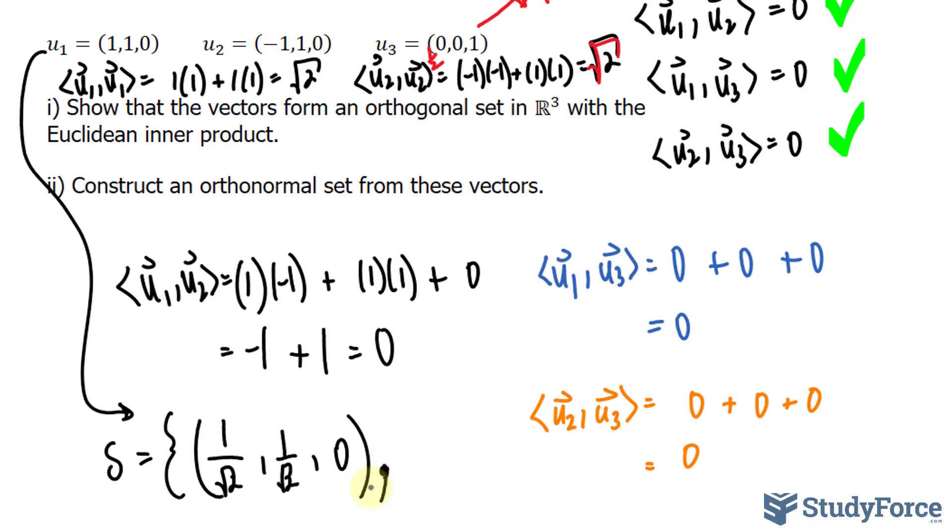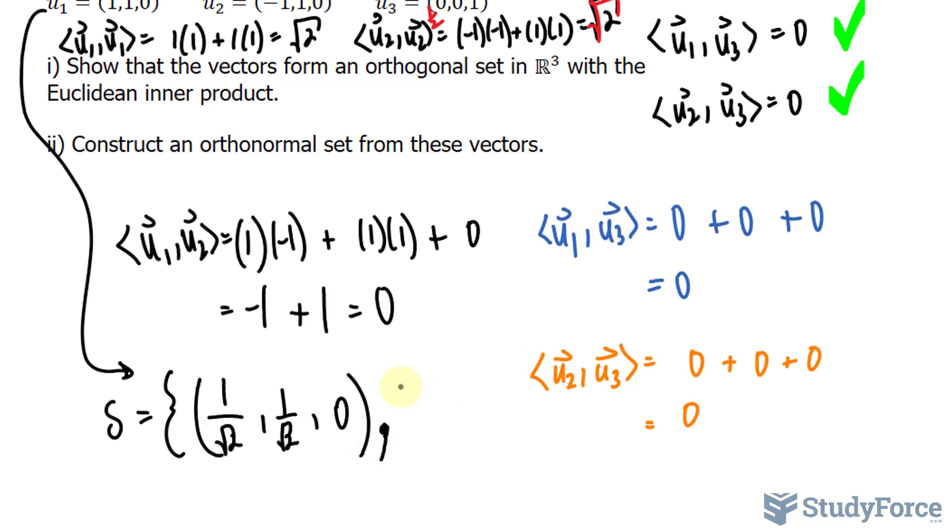Now we find the unit vector for the second vector. So this time I take negative one and divide it by the square root of two, because that was the norm. One over the square root of two. And zero over the square root of two again is zero.